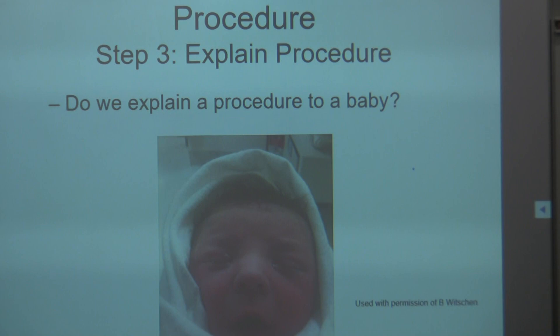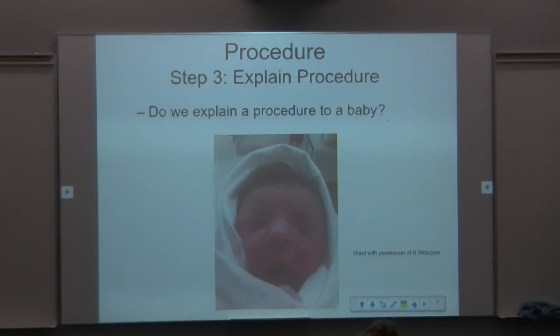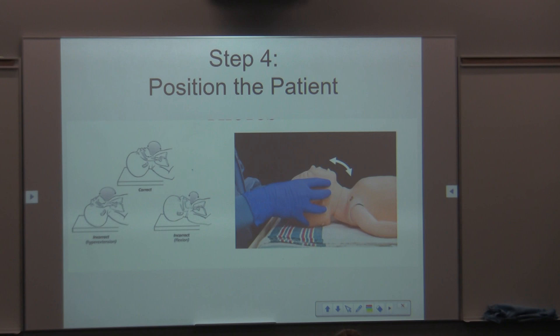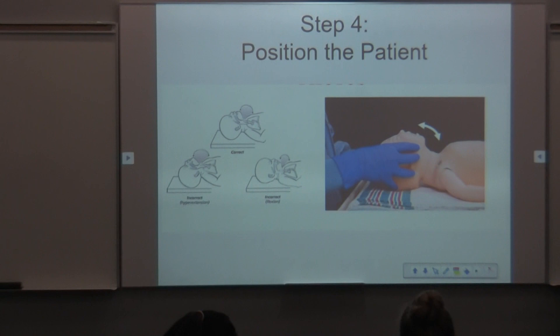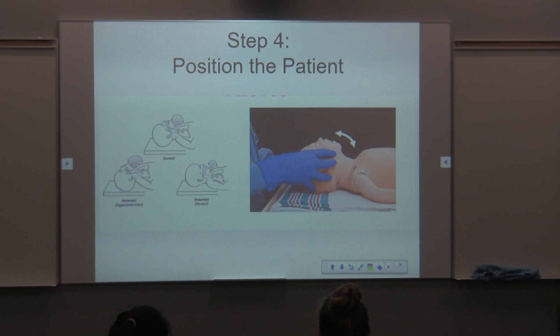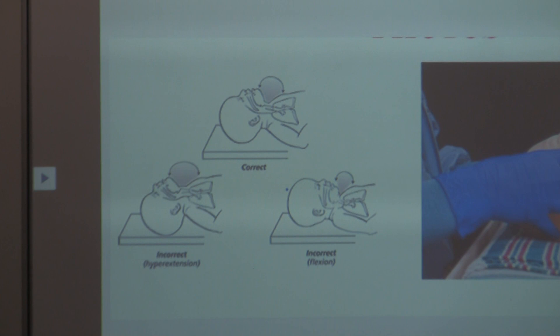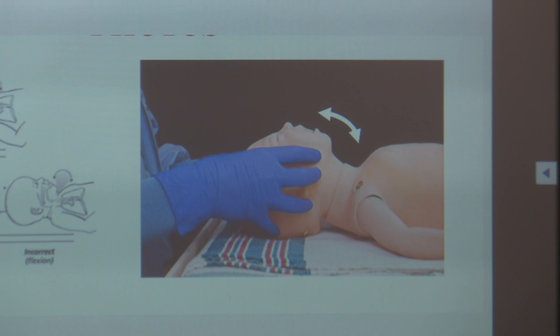For the procedure itself: explain it — but for a baby you can't explain it to them, so you explain it to the parents. Positioning: a good position is when the ear canal is aligned with the sternum. You can see the correct, over-extended, and flexed positions. You'll decide whether to use a shoulder roll or a head roll depending on the patient, then reassess to confirm good alignment.